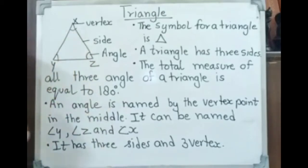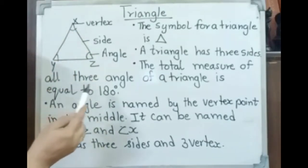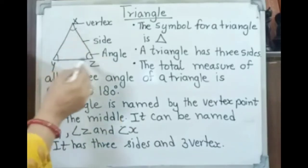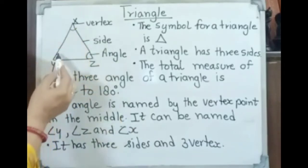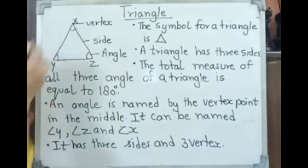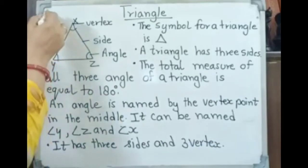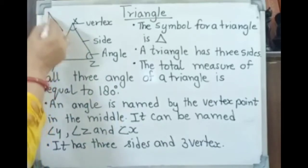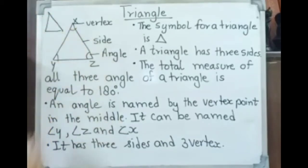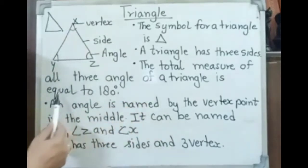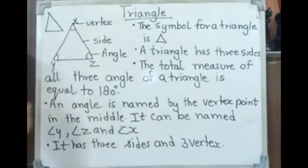The total measure of all three angles of a triangle is equal to 180 degrees. For example, if the triangle is equilateral, 60 plus 60 plus 60. If the triangle has a right angle, then 90, then the rest of the angles. The total measure of all three angles of a triangle is equal to 180.